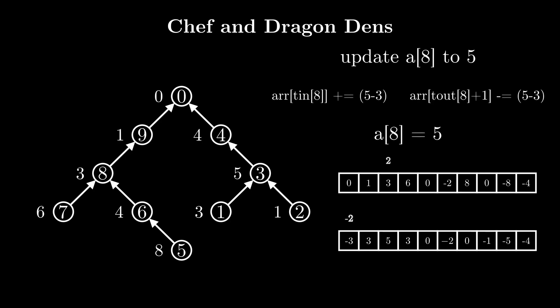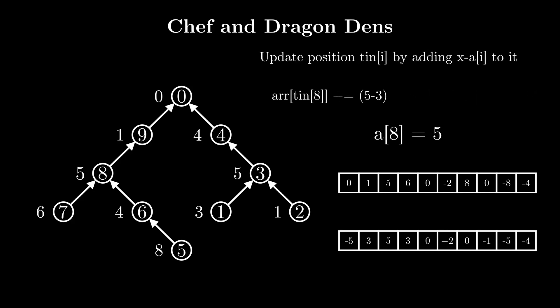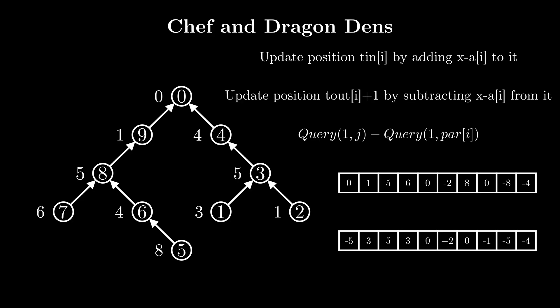If we update index 8 to 5, we add 2 to arr[T_in[8]] and subtract 2 from arr[T_out[8]+1], then update A[8] to 5. This problem can now be solved using a sum segment tree with point updates. For updates, we update position T_in[i] by adding x - A[i] and position T_out[i]+1 by subtracting x - A[i], then update A[i] to x. For queries, after confirming i is an ancestor of j, the answer is query(1, j) - query(1, parent of i). We maintain two segment trees and update both on updates, querying the appropriate one based on which tree has i as an ancestor of j.